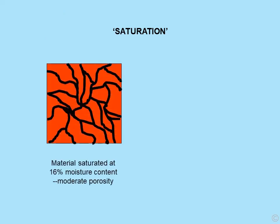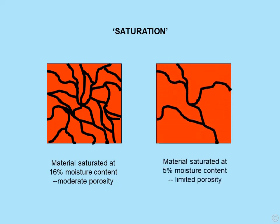What do we mean by the term saturation? This is a material — the black lines are the pores in the material; it is both porous and permeable. This material is saturated at a total moisture content of 16% — it has moderate porosity and permeability. However, this other material has limited porosity and permeability and is saturated at only 5% moisture content — all its pores are full of water. Neither can take in any more liquid, yet in many respects they are equally as wet. They are both saturated.